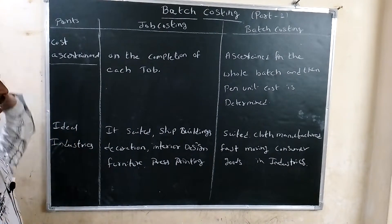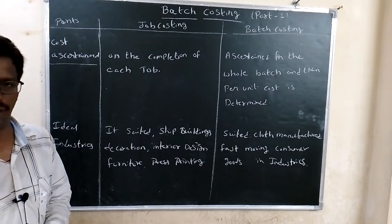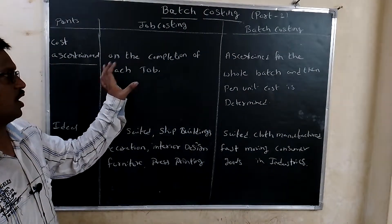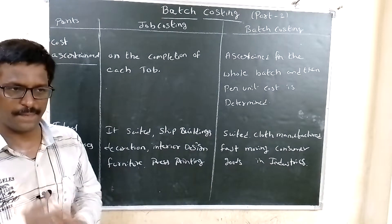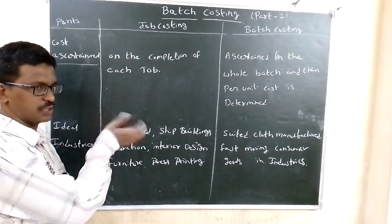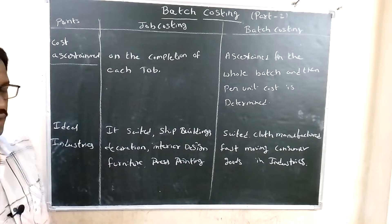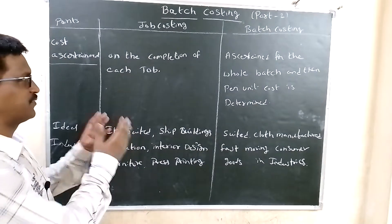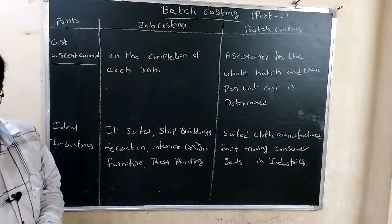Cost assignment: in job costing, upon the completion of each job, the cost per unit is assigned. The total cost is identified for that specific job, and the cost and profit for each job can be determined. In batch costing, the cost is defined based on the total cost of units produced in that batch.